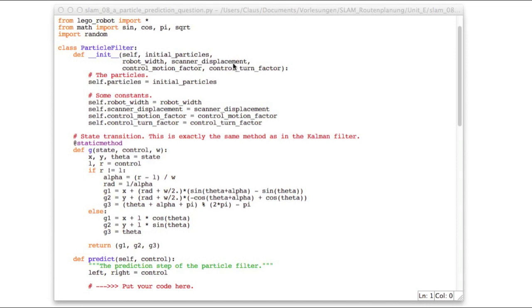It takes the robot constants, width and displacement, and the control motion factor and control turn factor, and it stores all that in member variables.